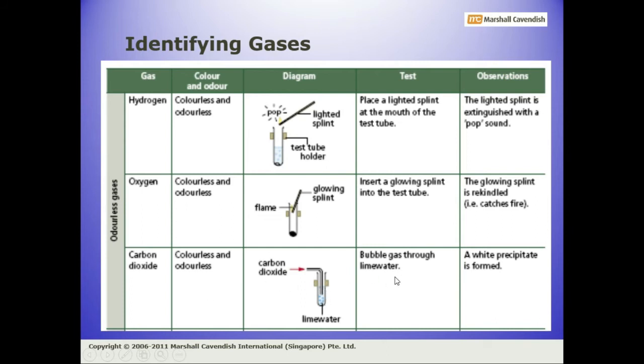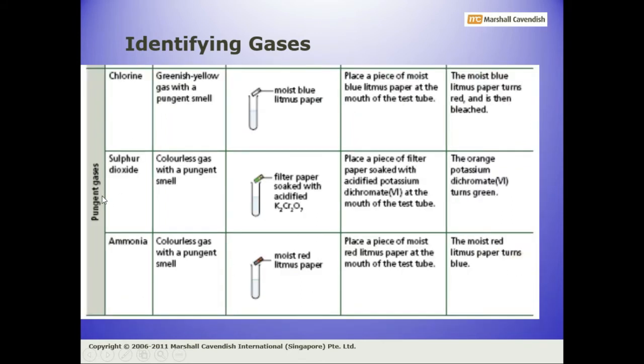The other three gases are of pungent smell. It means these three gases can be distinguished from the previous three gases because they have pungent smell: chlorine, sulfur dioxide, and ammonia. Among these three, chlorine has greenish yellow color, whereas there is no color of sulfur dioxide and ammonia gas. So how can we test the presence of these gases by performing a certain experiment?